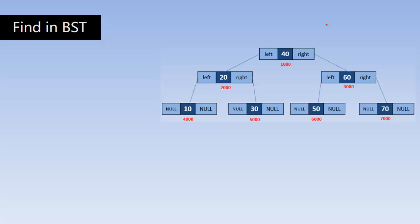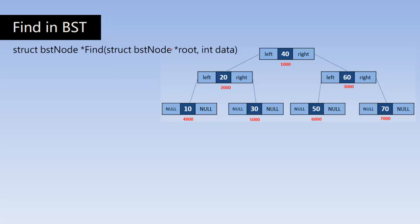Now let's understand the C code for finding an element in a binary search tree. This is a function called find which returns the address of the target node. The structure BST node has three variables: one integer for storing the data, and two pointer variables — one for storing the left link and another for storing the right link. This function returns the address of the found node; we need to pass the address of the root node and the data to search.